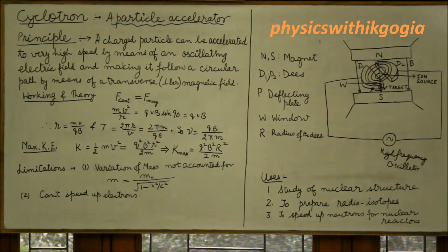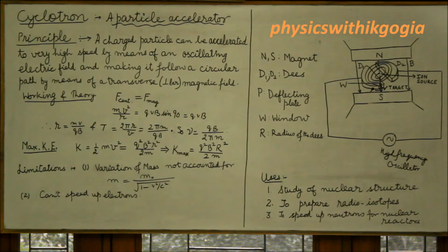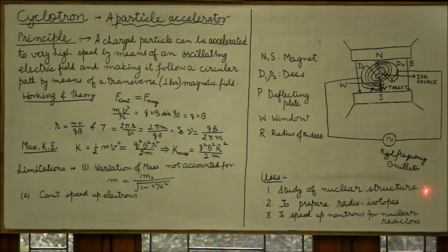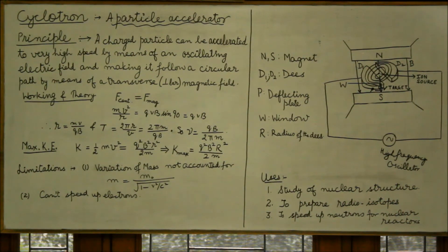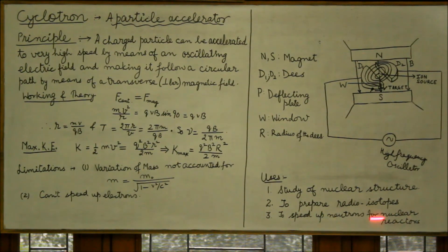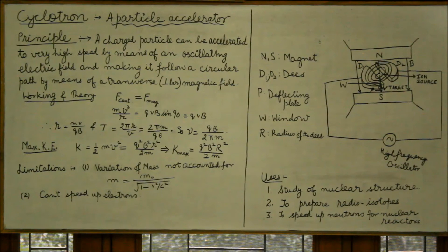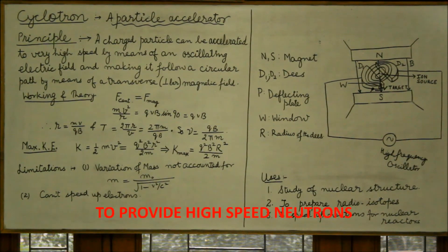The uses of the cyclotron: it can be used for the study of nuclear structure, because high speed particles can be made to interact with the nucleus, causing nuclear reactions that give us insight into nuclear structure. It is used to prepare radioisotopes required for nuclear medicine — both for diagnostic and curative purposes. The high speed protons produced can also be made to collide with neutrons to provide high speed neutrons for further nuclear reactions.